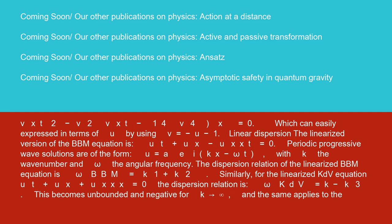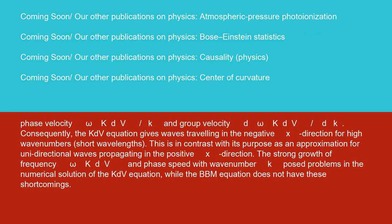The dispersion relation of the linearized BBM equation is omega BBM equals k over 1 plus k squared. Similarly, for the linearized KdV equation, ut plus ux plus uxxx equals 0, the dispersion relation is omega KdV equals k minus k cubed. This becomes unbounded and negative for k approaching infinity, and the same applies to the phase velocity omega KdV over k and group velocity d omega KdV over dk. Consequently, the KdV equation gives waves traveling in the negative x direction for high wave numbers, short wavelengths.